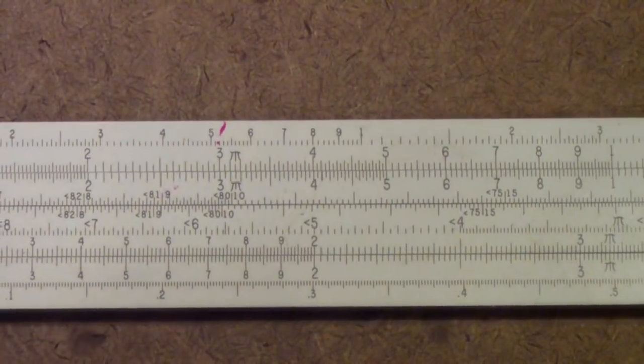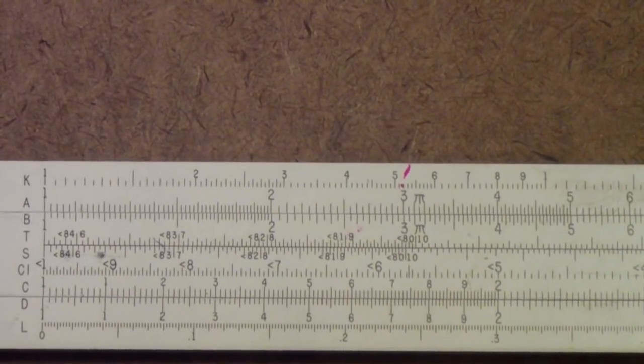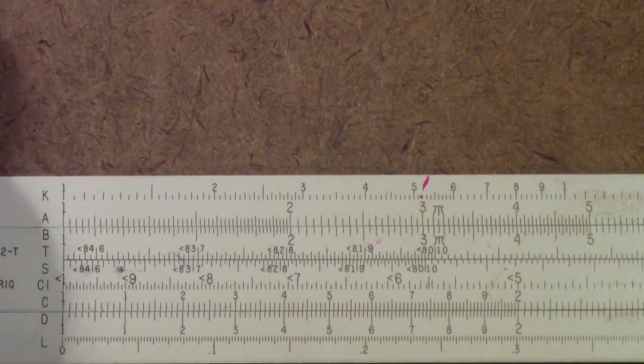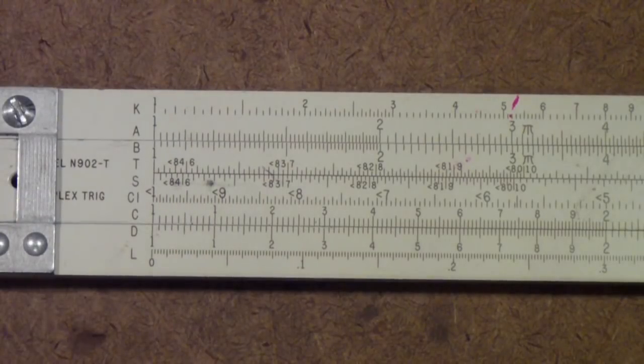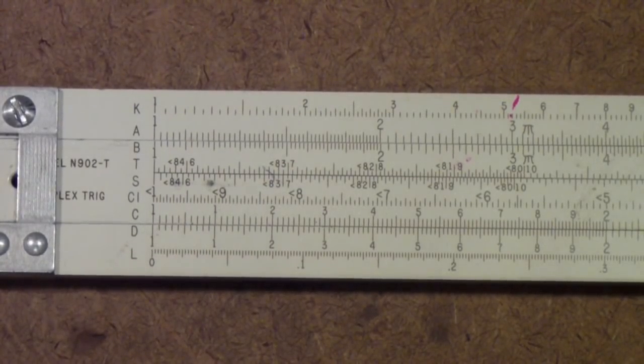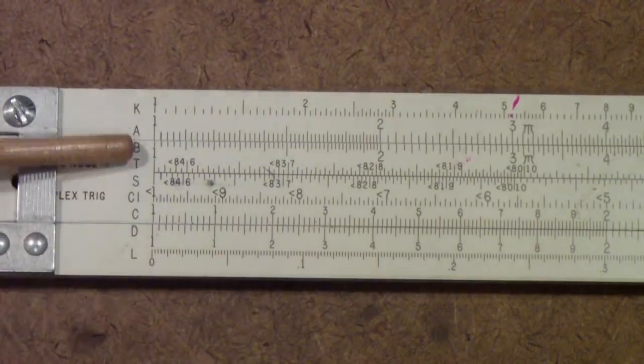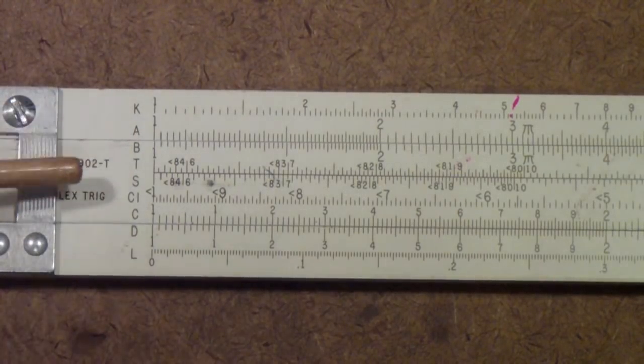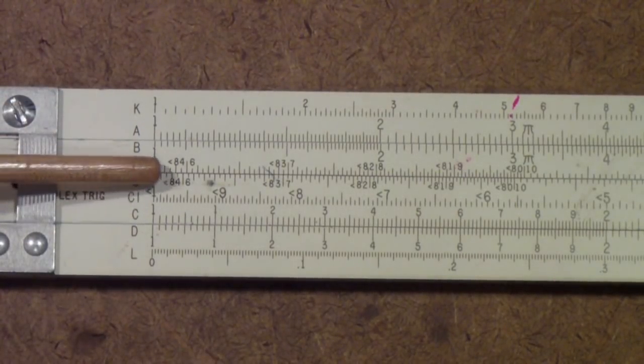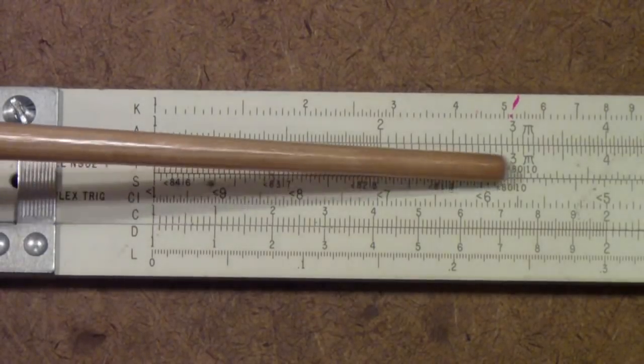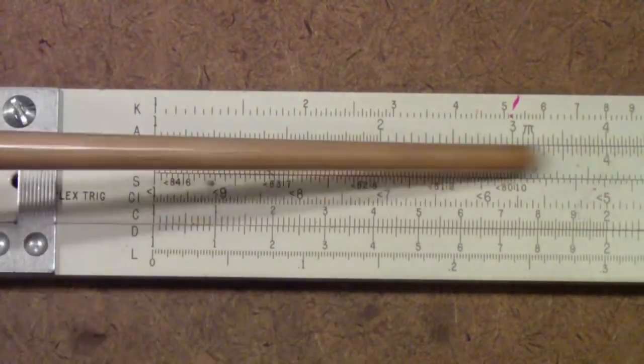This is a duplex trig, this is an N902T, and this was one of the first to have this double T scale that you see here, with T and S sort of back-to-back down this line here.